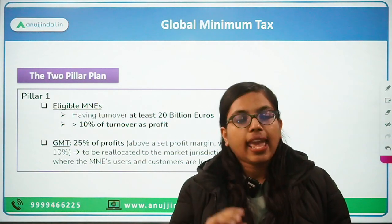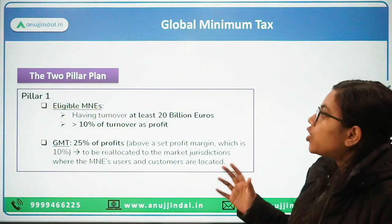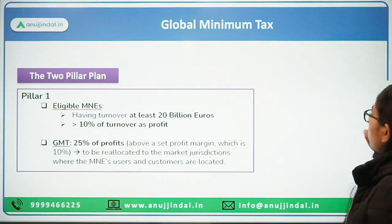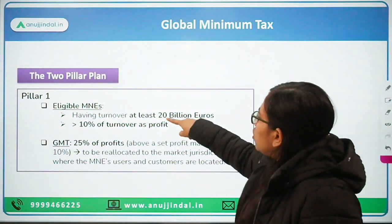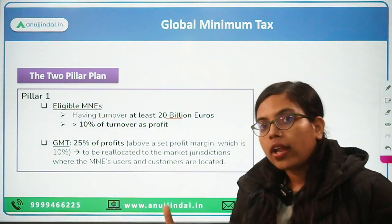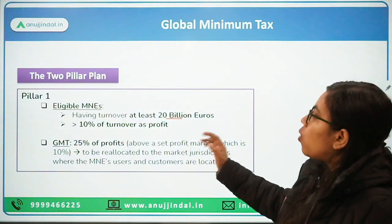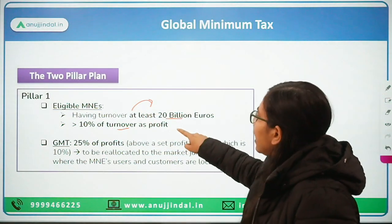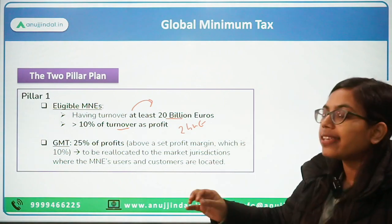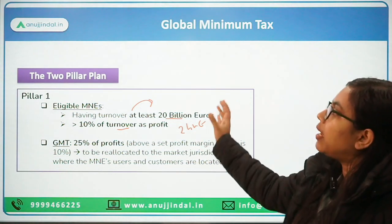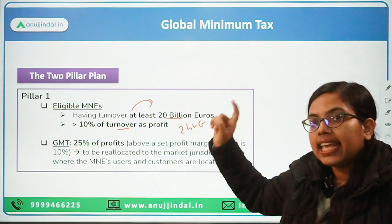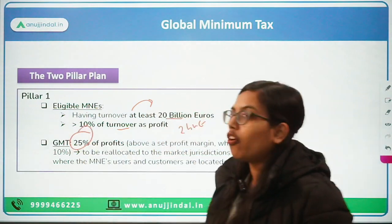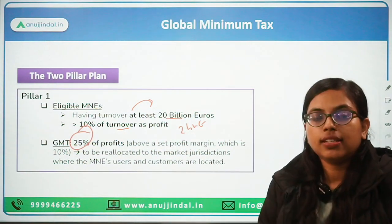Under Pillar One, large corporates are covered which have an annual turnover of more than 20 billion euros. If a company's turnover is more than 20 billion euros and they are earning a profit of more than 10% of the turnover — that is, if their annual profit is at least 2 billion euros — then these companies will come under Pillar One and will have to pay a global minimum tax of 25% of profit over and above the 10% limit.